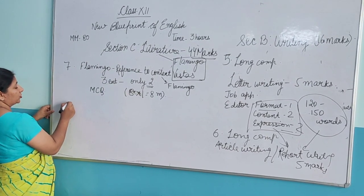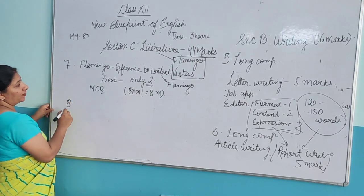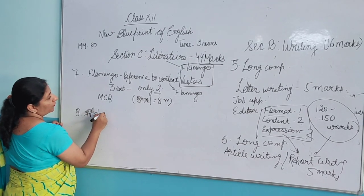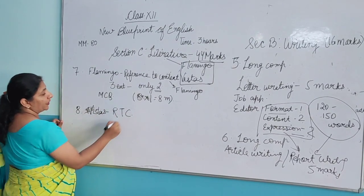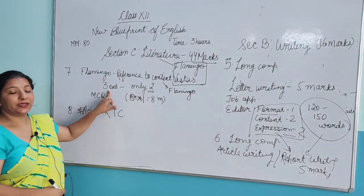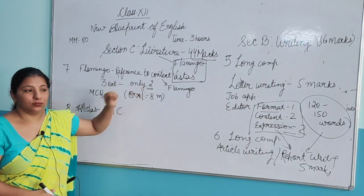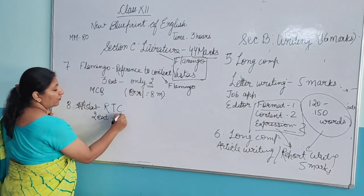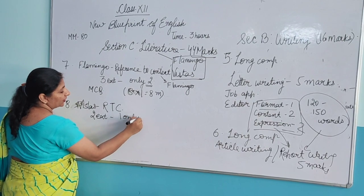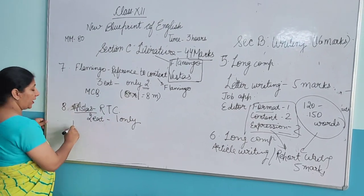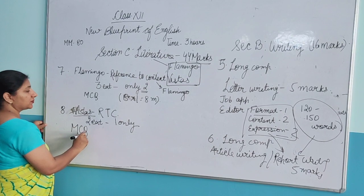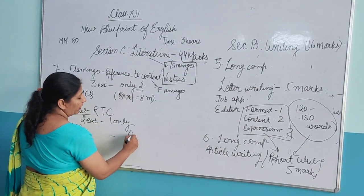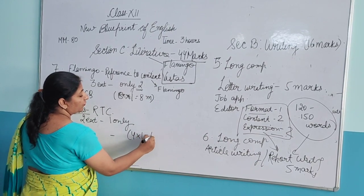Next comes Reference to Context from Vistas. Two extracts will be given but only one is to be done. This will again be completely MCQ based, of 4 marks — four questions of one mark each. So cumulatively, the reading section had 20 marks MCQ, then 8 marks MCQ, and now 4 marks MCQ — that is 32 marks of complete MCQ total.